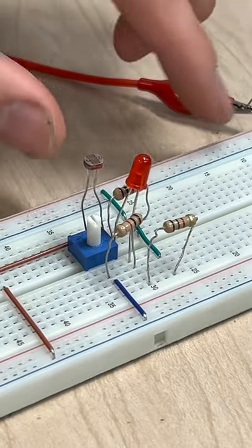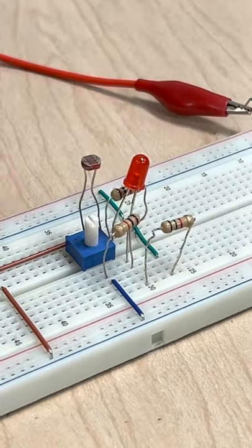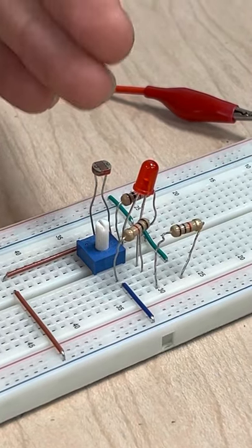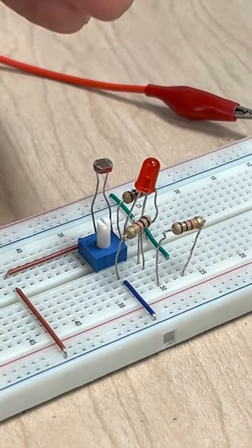And everything's connected properly, top's positive, bottom's negative. So if we cover our photoresistor, the light should turn on.